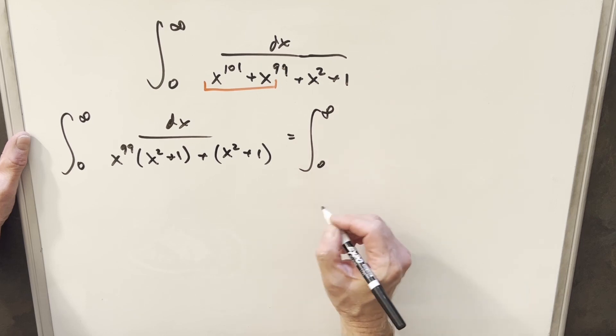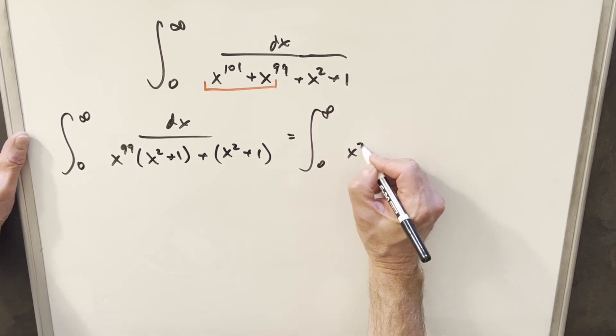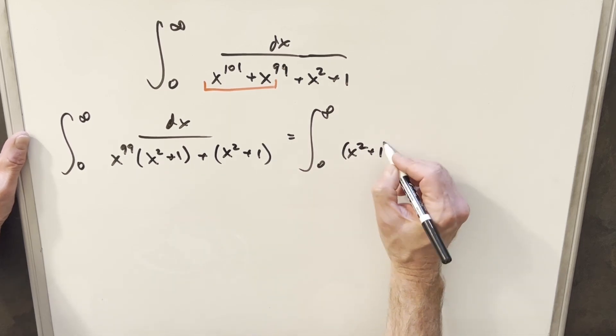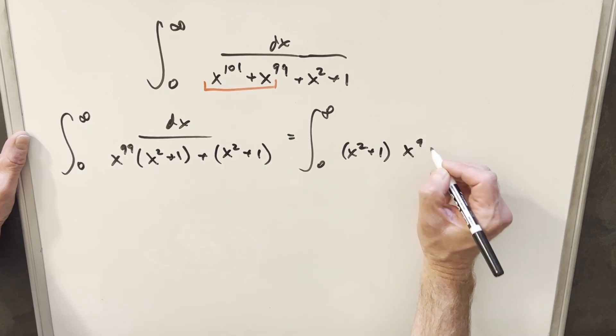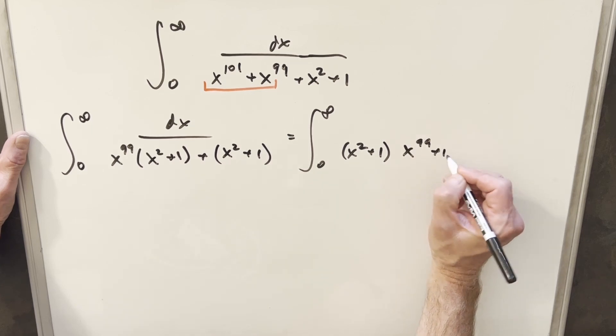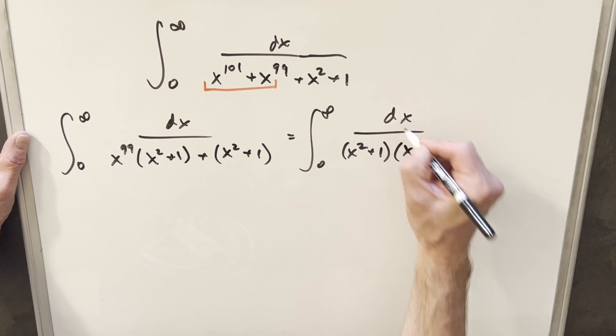Then doing a rewrite again, what I'm going to do is factor an x squared plus 1 out, and then this is going to be x to the 99 plus 1 all over dx.